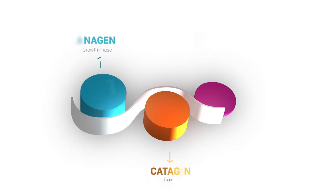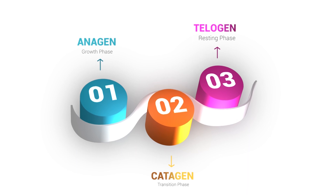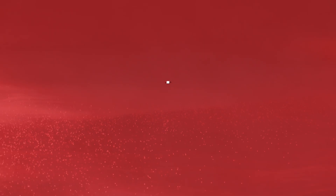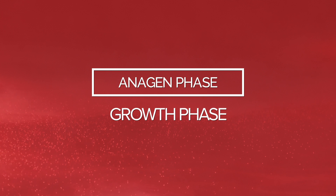To understand the process, we need to know about the three main phases of the hair growth cycle. First up, we have the anagen phase, also known as the growth phase.